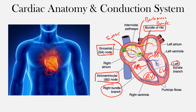The left bundle branch is subdivided into two fascicles: the left anterior fascicle and the left posterior fascicle. The right bundle branch depolarizes the right ventricle. From these fascicles and the right bundle branch, conduction goes to the Purkinje fibers and then to the individual cells — the cardiomyocytes, the heart muscle cells.